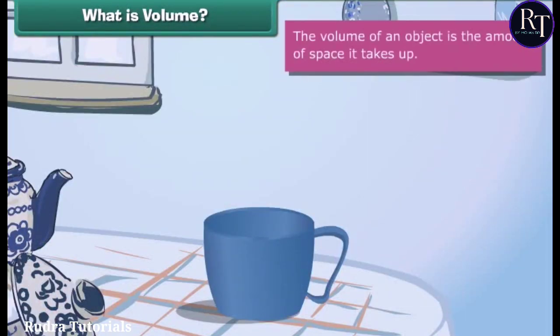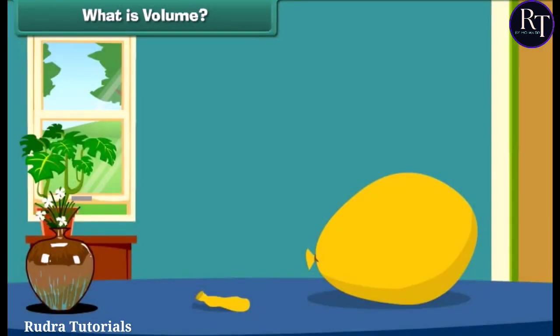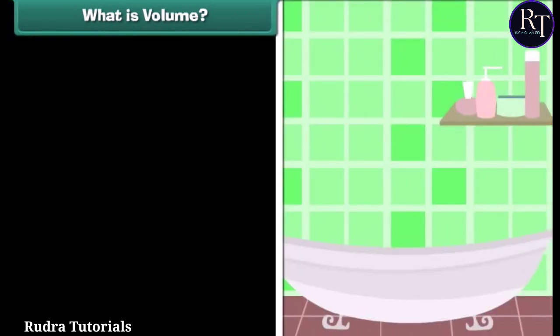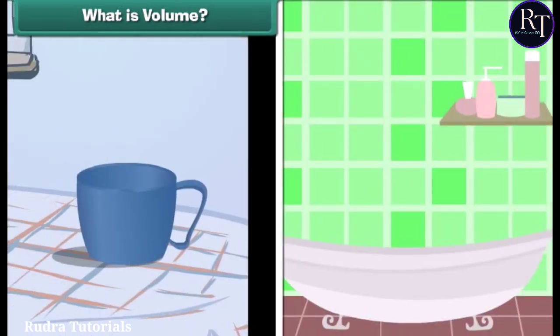The volume of an object is the amount of space it takes up. For example, an inflated balloon takes up more space than an empty balloon. That means that a balloon that is blown up has more volume than one that hasn't been blown up. Volume can also show capacity, how much a container can hold. A bathtub has more volume than a cup of coffee.